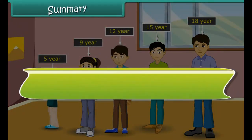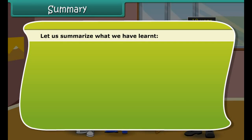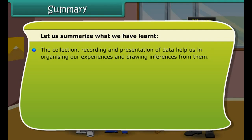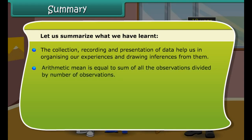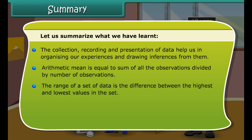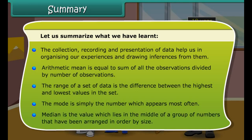Summary: The collection, recording, and presentation of data help us in organizing our experiences and drawing inferences from them. Arithmetic mean equals the sum of all observations divided by the number of observations. The range of a set of data is the difference between the highest and lowest values. The mode is the number which appears most often. The median is the value which lies in the middle of a group of numbers arranged in order by size.